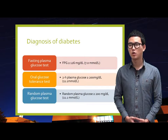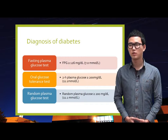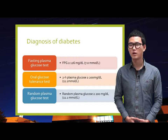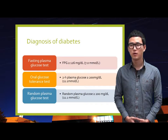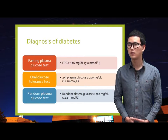To diagnose diabetes, generally three tests are used. A fasting plasma glucose test measures blood glucose in a person who has not eaten anything for at least 8 hours. This test is used to detect diabetes and prediabetes.